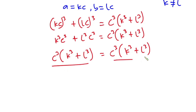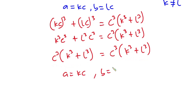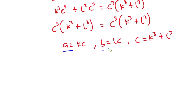You can see the left hand side is equal to the right hand side, so we can conclude that a is equal to kc, b is equal to lc, and c is equal to k to the third power plus l to the third power. We require a, b, and c to be integers where a is never equal to b and b is not equal to c.